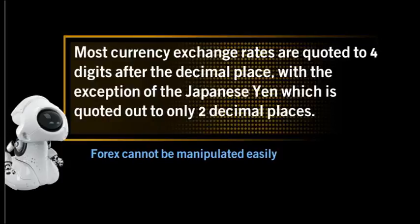However, not all currencies have the US dollar as the base. The Queen's currencies — those currencies that historically have been tied with Britain, such as the British pound, Australian dollar, and New Zealand dollar — are all quoted as the base currency versus the US dollar. The Euro, which is relatively new, is quoted the same way as well. In these cases, the US dollar is the counter currency and the exchange rate is referred to as an indirect quote.